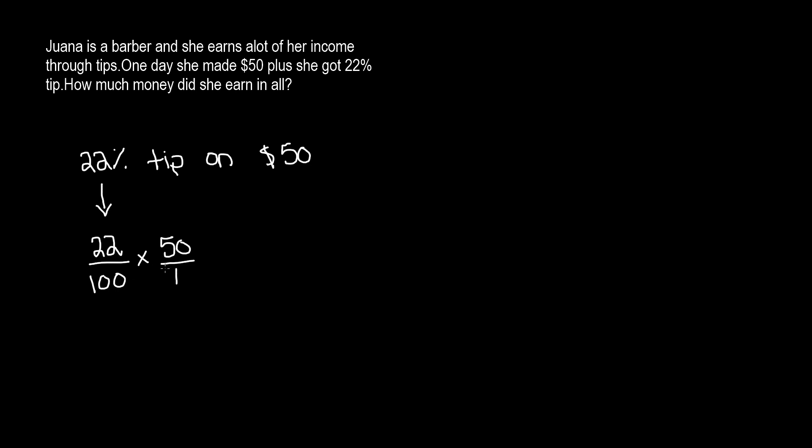50 is a number without a denominator so we can always add 1. Before we do this, we can make this problem easier by deleting this 0 and this 0, and now we have 22 over 10 times 5 over 1. Now we need to multiply the numerators, which is 22 and 5, by each other, and we need to multiply the denominators, which is 10 and 1, by each other.